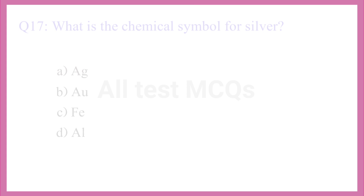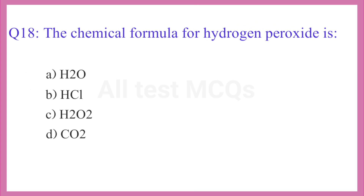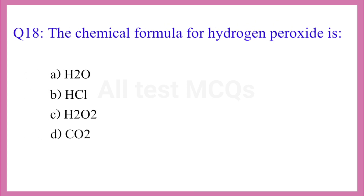Question No. 18. The chemical formula for hydrogen peroxide is? The correct answer is option C. H2O.